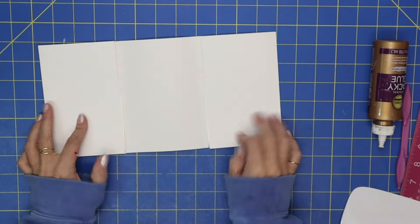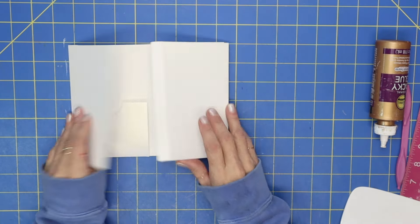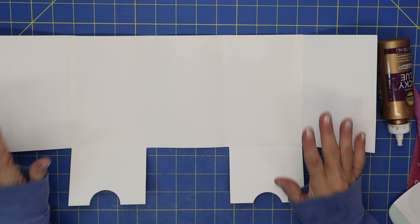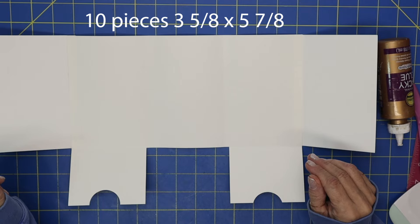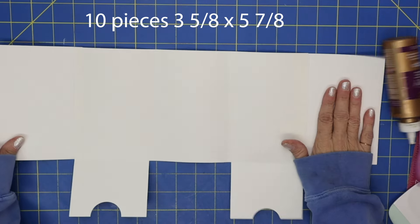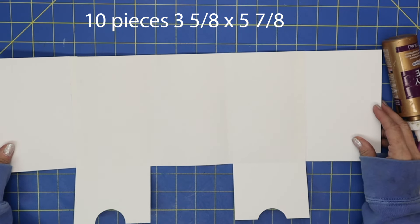Okay, we'll open it up and then we've got this, this, this that folds over, that folds over, and boom, you've got your mini album. And then for your matting you will want 10 pieces that are 3 and 5/8 by 5 and 7/8.